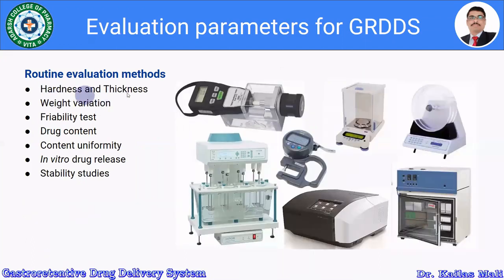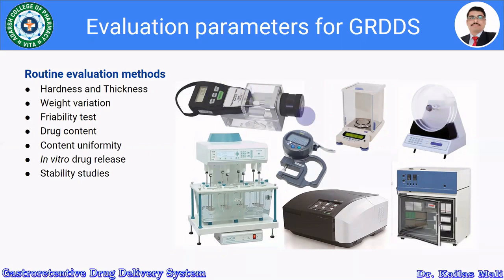Looking at routine evaluation methods for the gastroretentive drug delivery system: first is hardness and thickness. The hardness and thickness of the designed formulation are measured using a suitable hardness tester — this is the Electrolab hardness tester — and a thickness tester is used to measure the thickness of the dosage form.